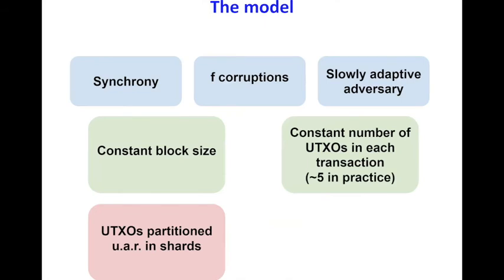Before the next result, we introduce another assumption regarding how UTXOs are partitioned into shards — specifically, we assume they are partitioned uniformly at random. In a non-randomized process, the adversary can precompute and bias the process in permissionless settings. Hence, all sharding protocols employ a random process for shard creation. In addition, we want all shards to process approximately the same number of transactions; otherwise, the efficiency of the protocol would depend on the shard with the most load.